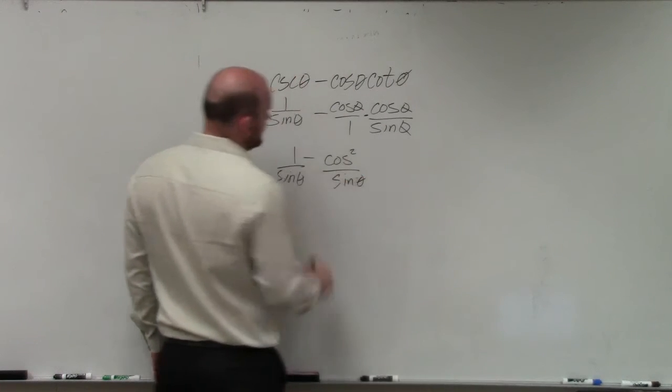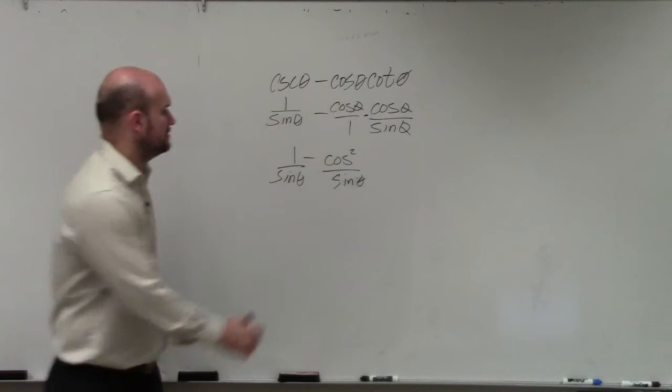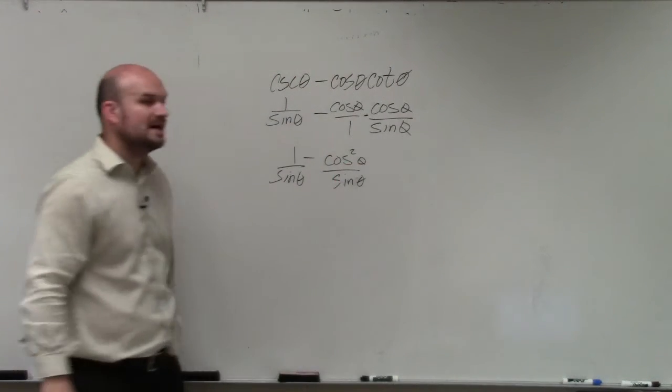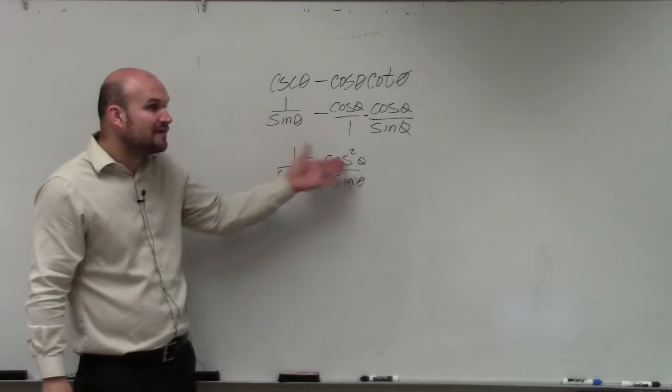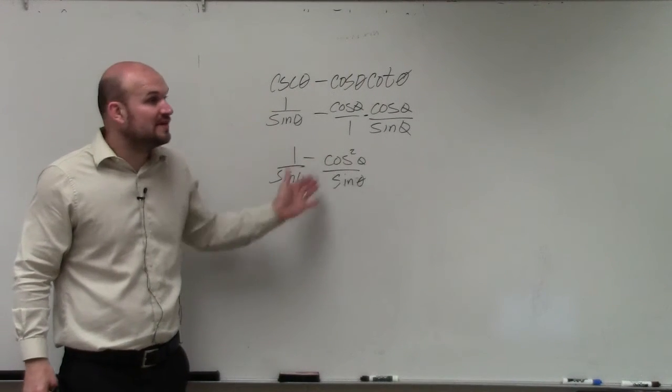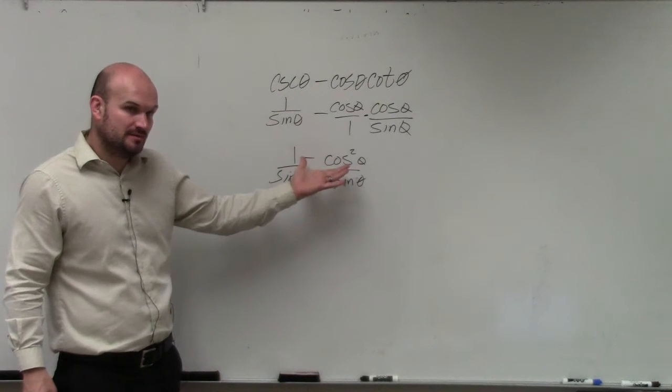So now we have cosine squared over sine. Cosine squared of theta over sine of theta. Now you have two fractions with the same denominator. If you have two fractions with the same denominator, you just combine the numerator, right?